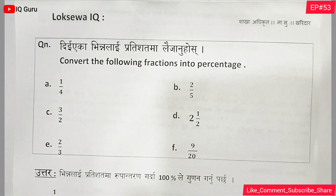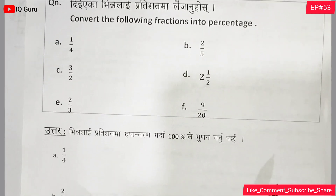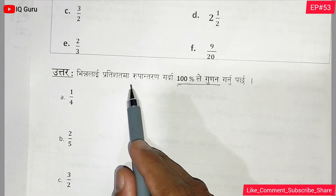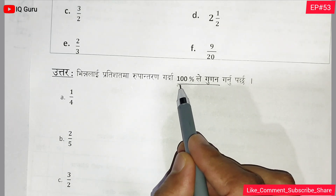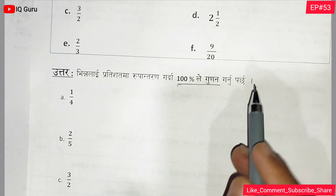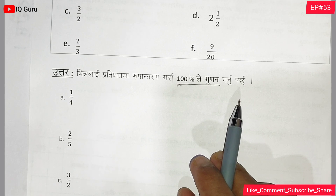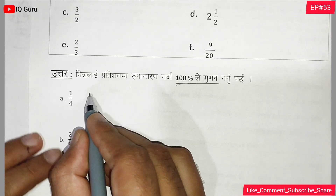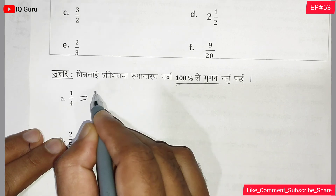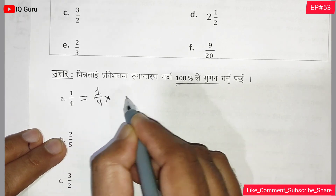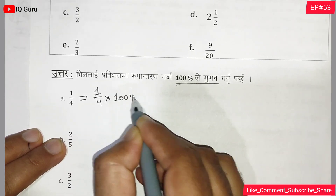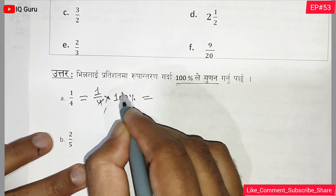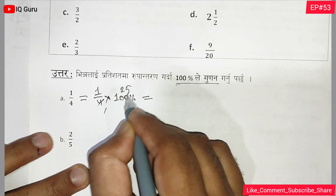For question a: 1 by 4 equals 1 by 4 into 100 percent, which equals 25 percent.